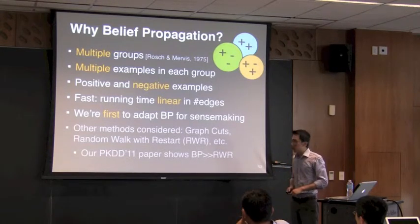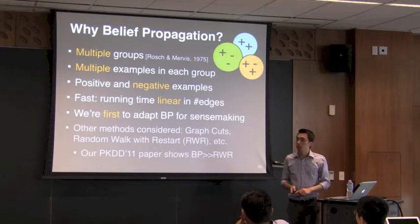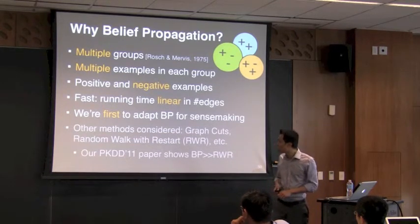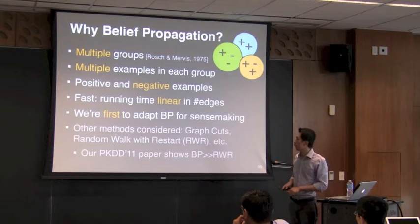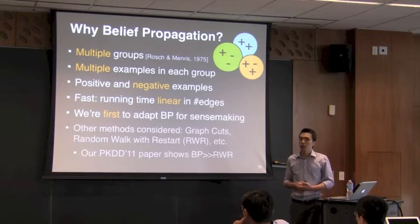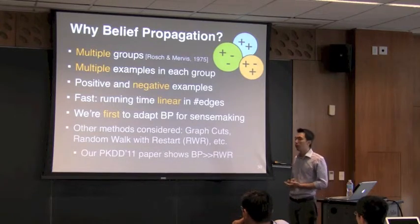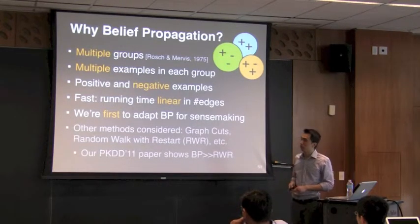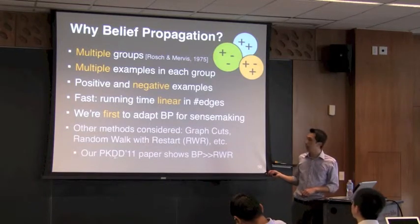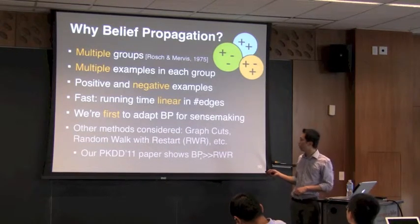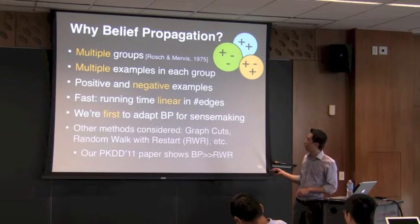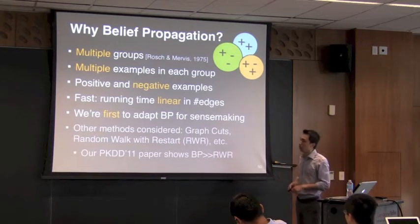We are the first to adapt belief propagation for sense-making. For other methods we tried — graph cut and random walk with restart — they are very similar when you only have two groups. But if you want more than two groups, you need to use belief propagation. In a paper published at PKDD, another data mining conference, we show that belief propagation can do more than random walk with restart.